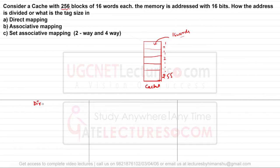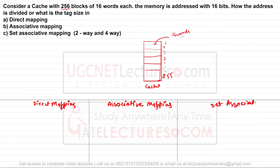This first diagram represents direct mapping. The next one represents associative mapping, and the last one represents set associative mapping. In all three cases — direct mapping, associative, and set associative — the differentiation is only in how the main memory address is structured. The question states that addresses used for main memory are 16 bits, so all three cases will have 16-bit addresses.